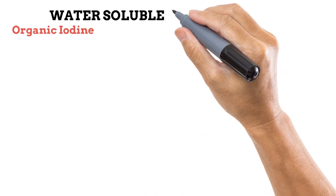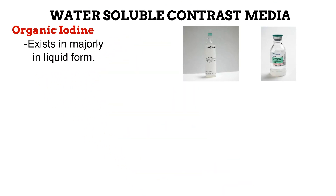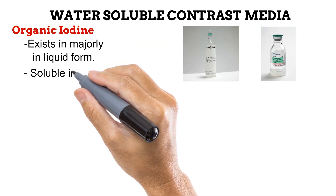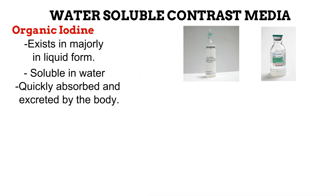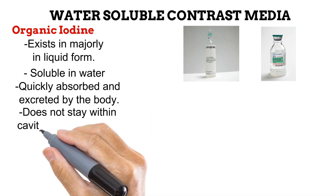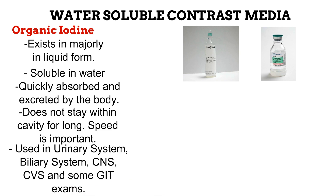Next is the water-soluble contrast media. The organic iodines fall under this group. This type of contrast media usually exists in liquid form. It is soluble in water, which means that when introduced into the body, it is rapidly absorbed into the body's water and excreted by the kidneys. Thus, it does not stay within the region of interest for long, which is why speed is important in investigations using this type. It is used in investigations of the urinary system, the biliary system, the central nervous system, the cardiovascular system, and in some gastrointestinal exams — such as when there is a suspected case of perforation or obstruction.